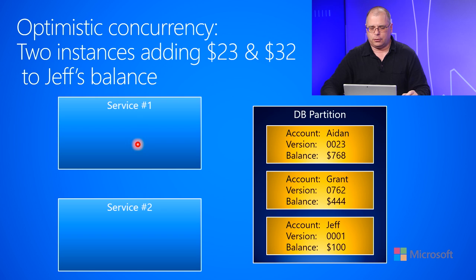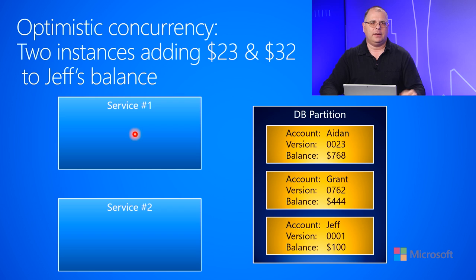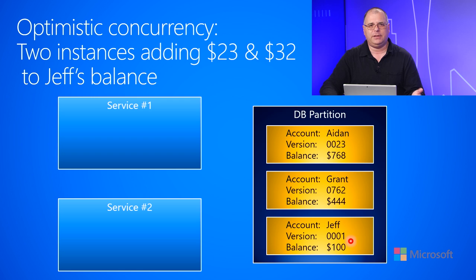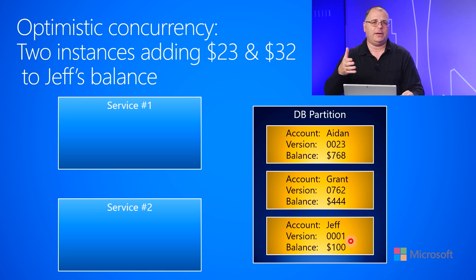Now I have two stateless services that are going to try to manipulate Jeff's account. The first service is going to try to add $23 to Jeff's account, and the other service is going to try to add $32. You can imagine I'm at my ATM machine adding $23, and my wife is at another ATM adding money to our joint account — we happen to be doing it at the exact same moment in time, and we want to make sure no data gets corrupted.